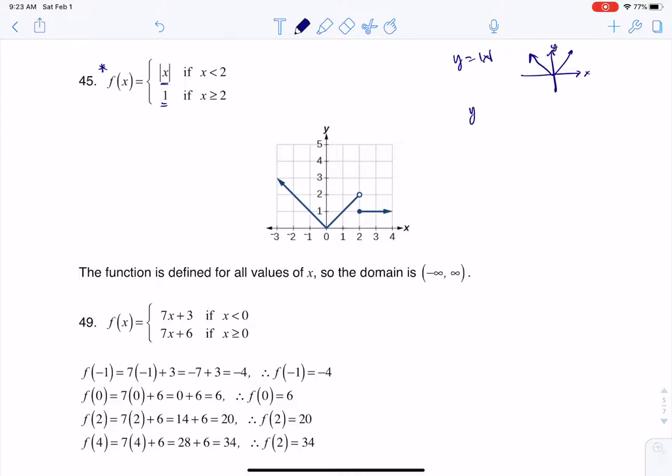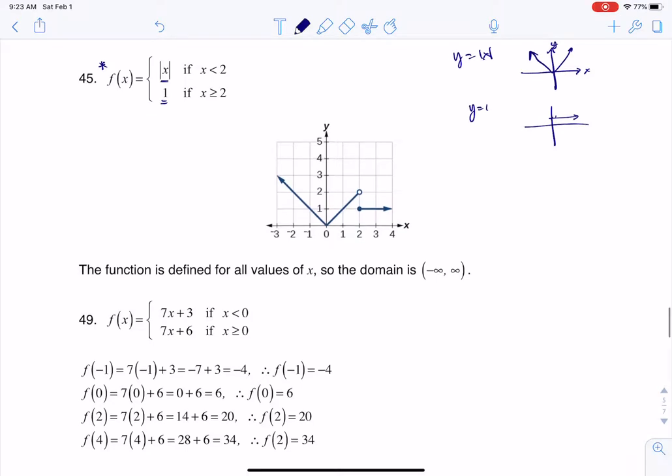And then if I want to graph the line Y equals 1, that's a horizontal line at 1. It goes like this. There we go.